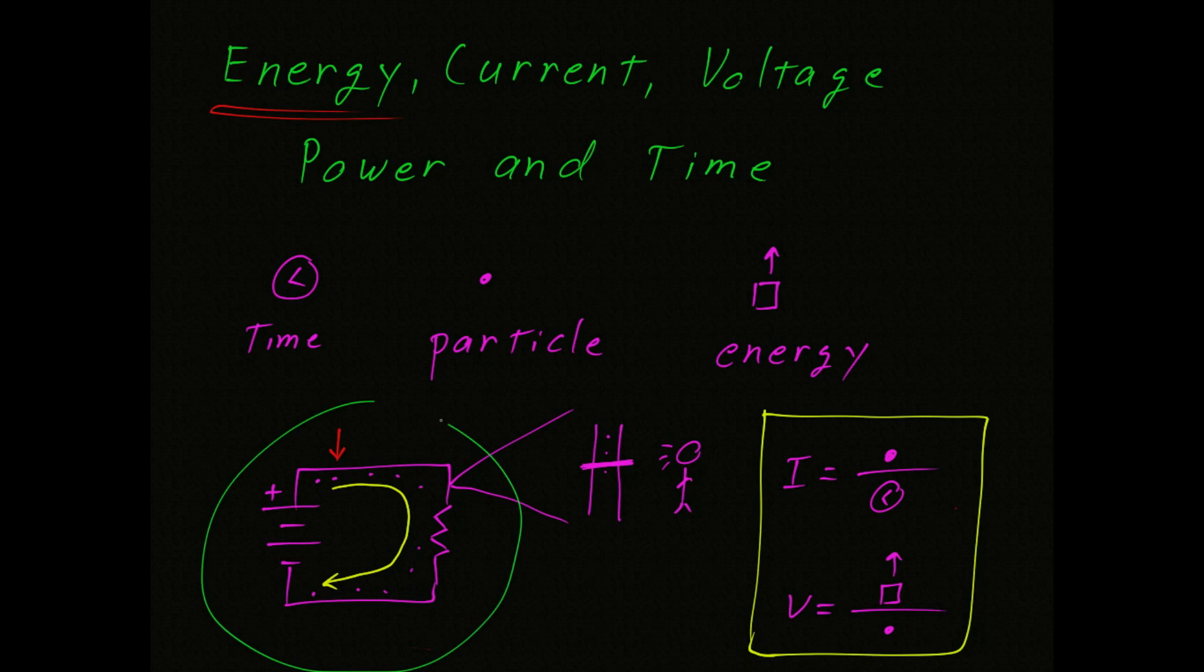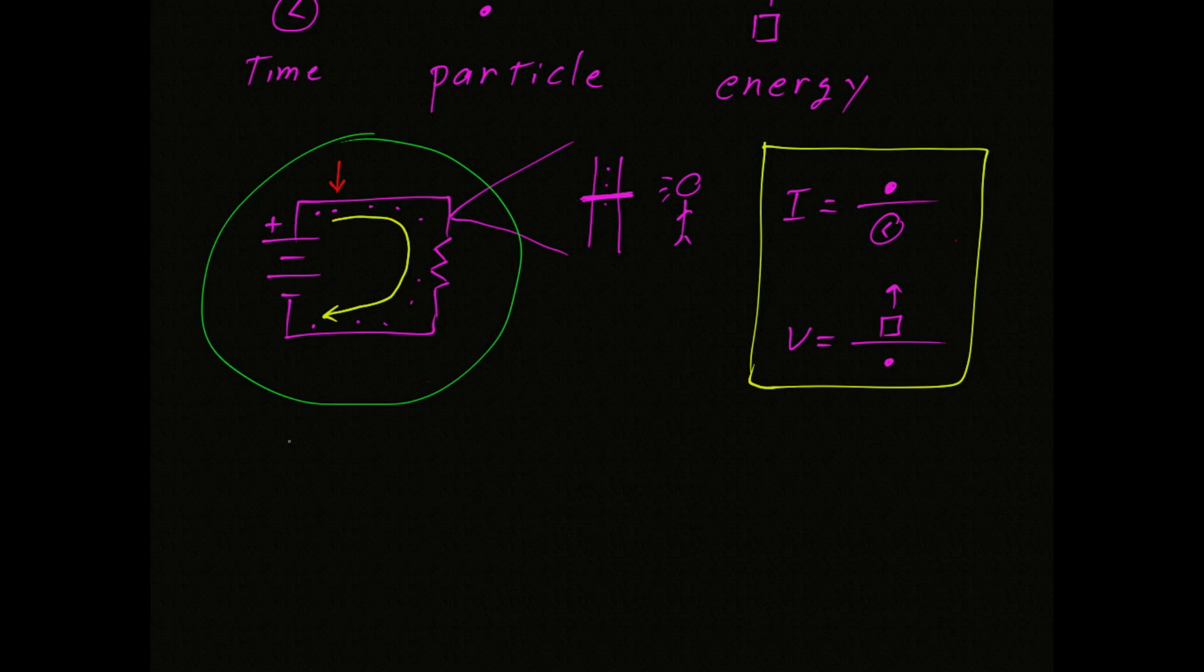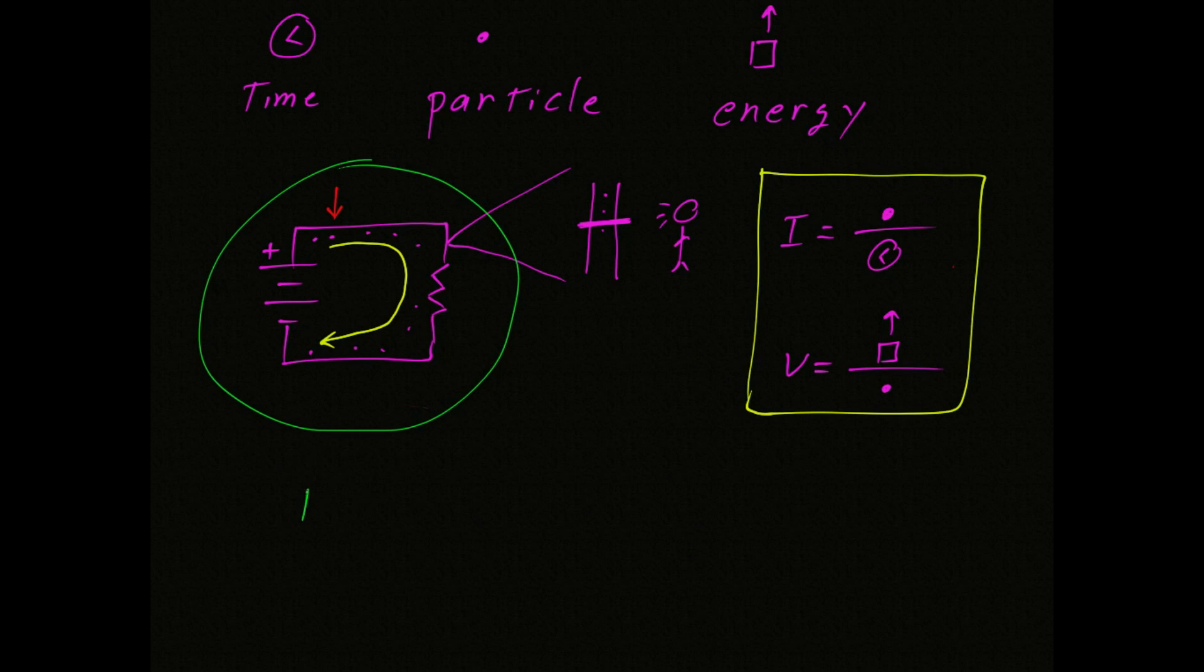We're going to come back to this circuit in a moment, but right now I want to talk about power. We know that energy is the product of power and time. And if we rearrange this equation, we could say that power is equal to energy per unit time. You see, power is nothing more than a description of the energy flow. How fast is the energy moving in this circuit? How fast is the work being done?